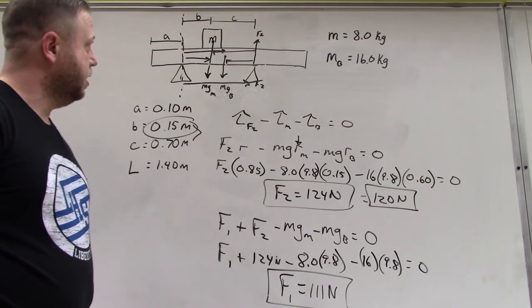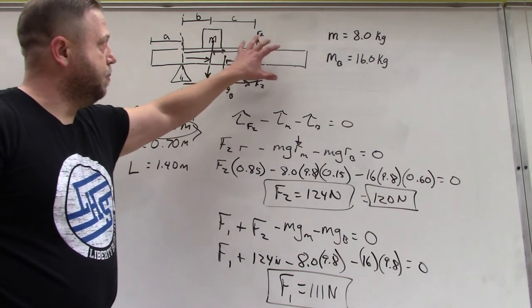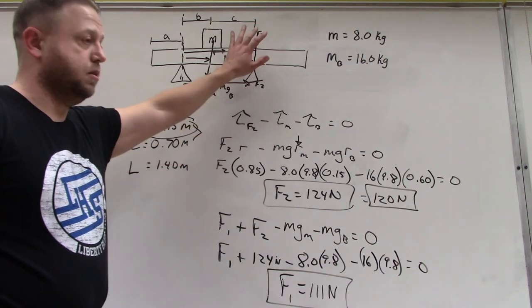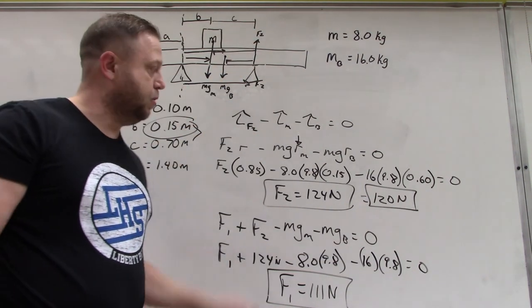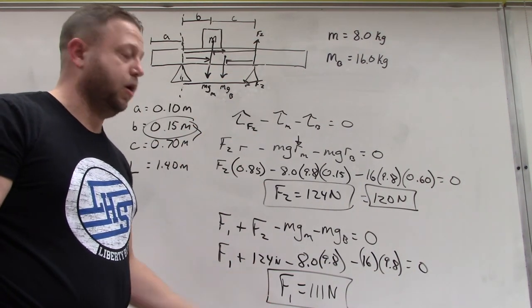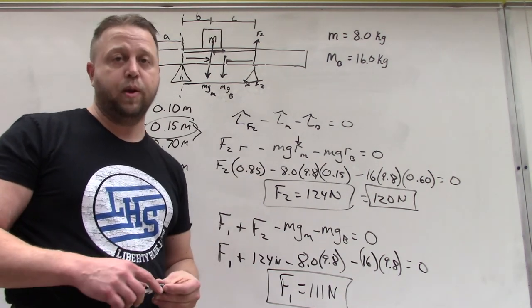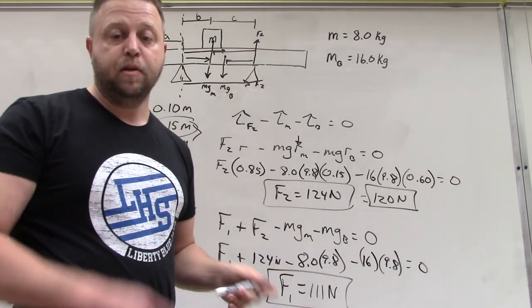F1 equals 111 newtons. Now I know the two forces upwards. If you look at the picture, it makes sense that you've got more of the beam over here pushing down onto F2, so more force is pushing back up. F2 is greater than F1, but the overall sum of all of them equals zero when we add up all the forces. Hope that helps.